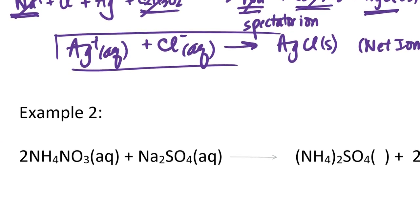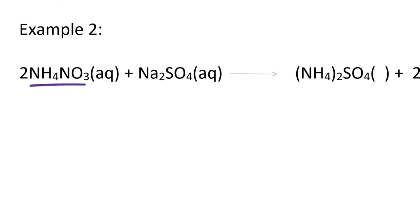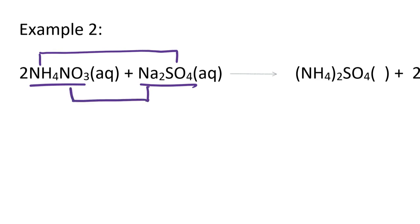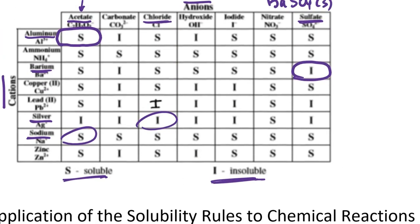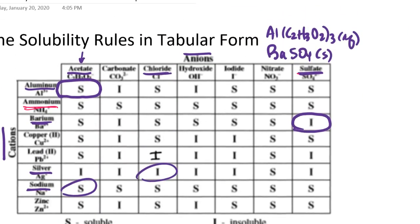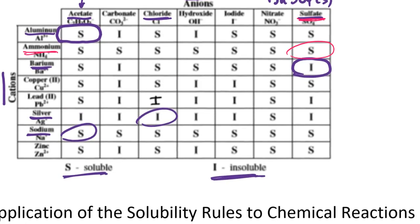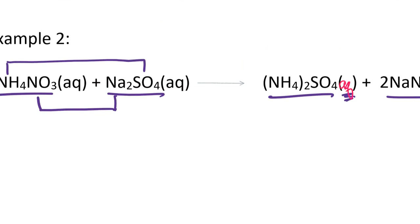Let's take one more example. In the second example, I have ammonium nitrate and sodium sulfate reacting. Based on what we know about double displacement reactions, ammonium will pair up with the sulfate ion and sodium will pair up with the nitrate ion — those are my two predicted products. To predict the state of matter for each product, I'll consult the solubility table. Looking up ammonium and sulfate and traveling to their intersection, the compound is predicted to be soluble, so ammonium sulfate should produce an aqueous solution.